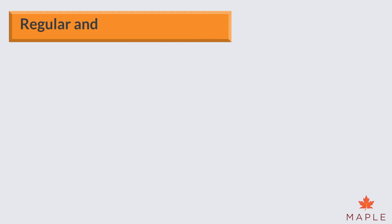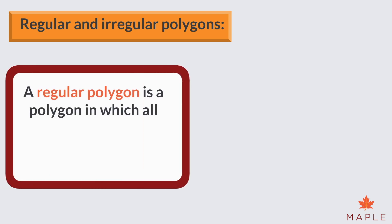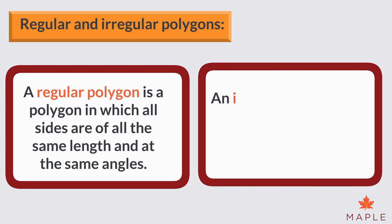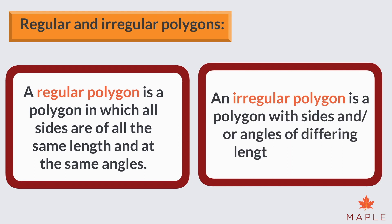Regular and irregular polygons: a regular polygon is a polygon in which all sides are of the same length and at the same angles. An irregular polygon is a polygon with sides and/or angles of differing lengths and sizes.